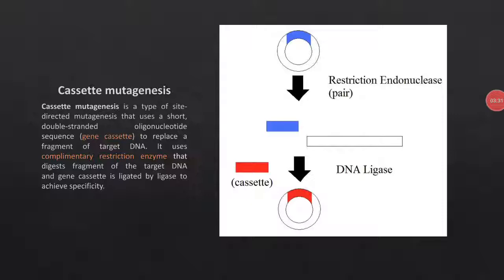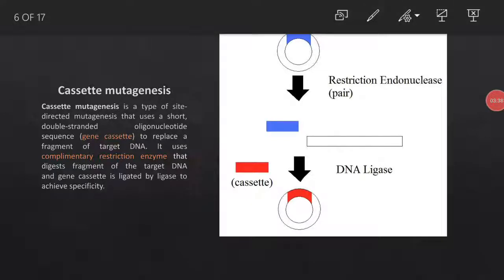In cassette mutagenesis, a circular double-stranded DNA molecule is involved. The piece of DNA we want to change is called a cassette, and this is the site where we want to change the amino acid. Restriction endonuclease enzymes will cut this fragment of DNA, and the new cassette — the intentional sequence — will be inserted into the plasmid with the help of DNA ligase.